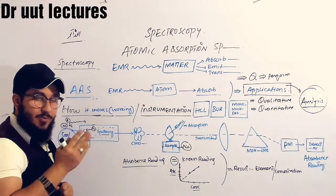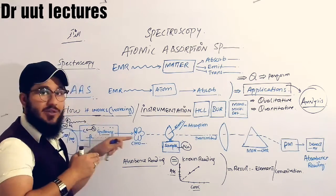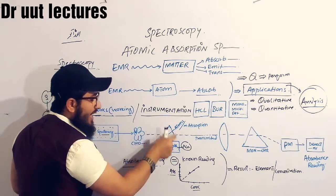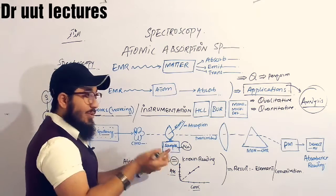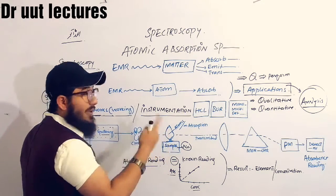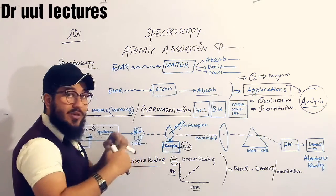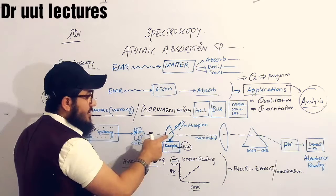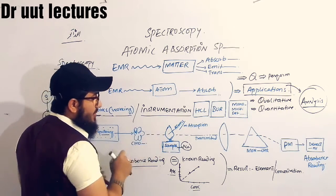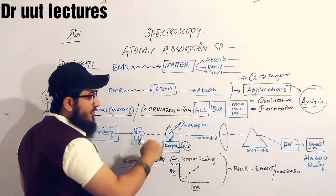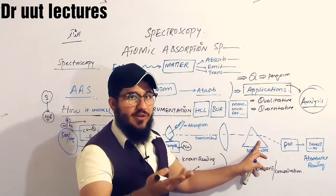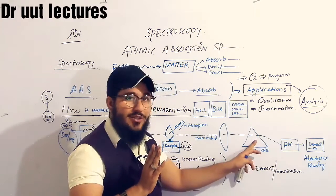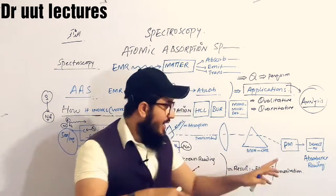These photons will move towards the burner, which is used for injecting the sample. We inject our sample in liquid form into the burner, and it will burn and convert the sample into atom form. These atoms are then available, and the photons will target those atoms. The atoms will absorb some of the photons and the rest will be transmitted. These transmitted photons will reach the lens, which targets them towards the monochromator. Here we are using a prism, which then targets the photons towards the photomultiplier tube.